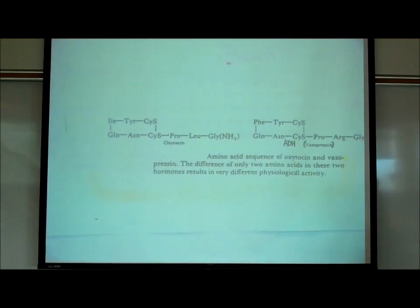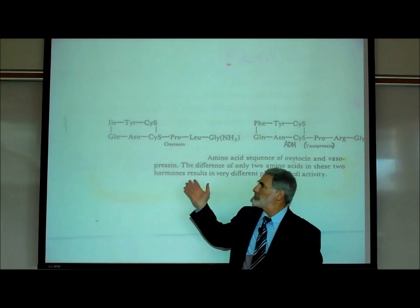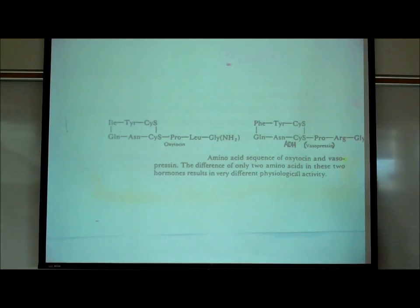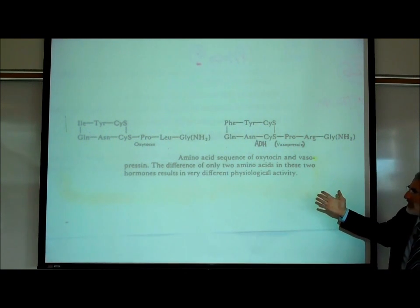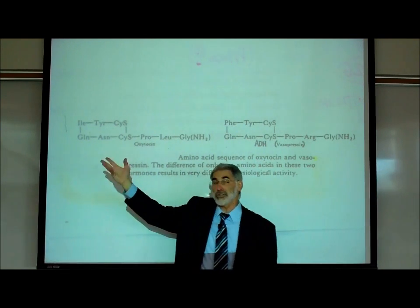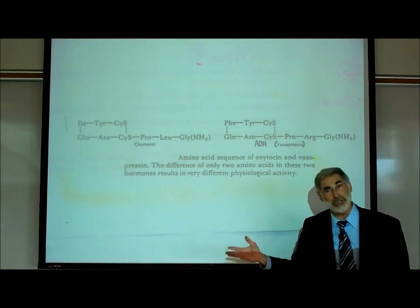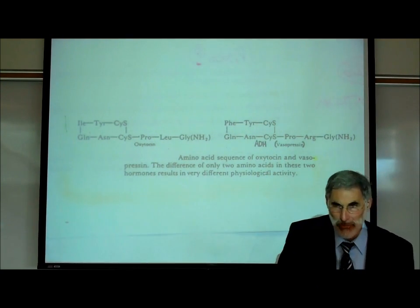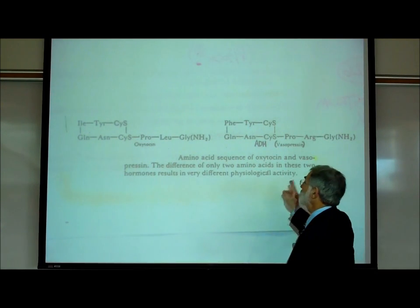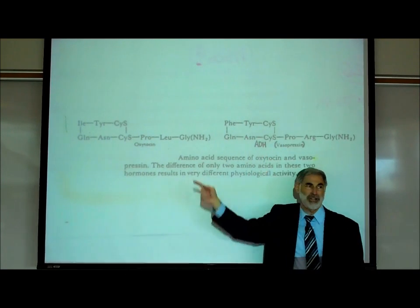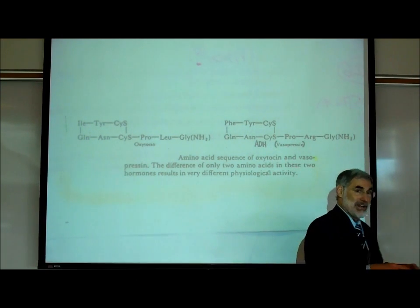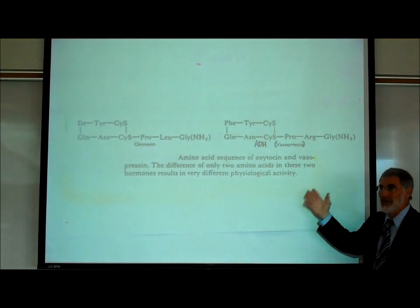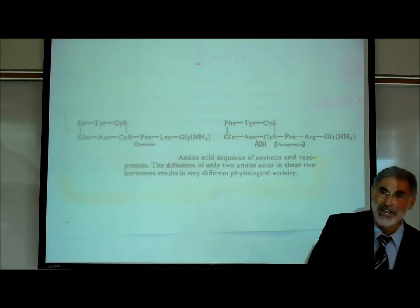At the bottom of the page it shows the chemical structure of antidiuretic hormone — ADH — which is made up of eight amino acids, a short polypeptide. Right next to it is oxytocin, also a polypeptide. There's only a difference of two amino acids between ADH and oxytocin, yet that slight difference in chemical structure has a profoundly different effect — causing a woman to go into labor versus causing the kidneys to retain water.